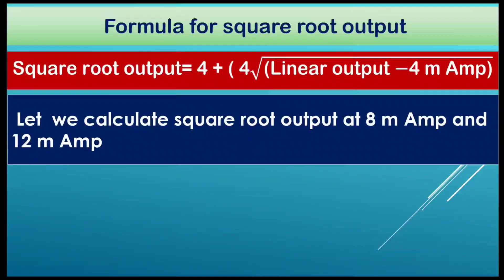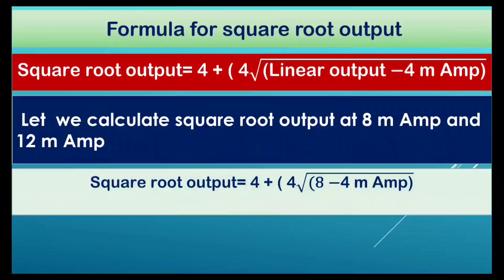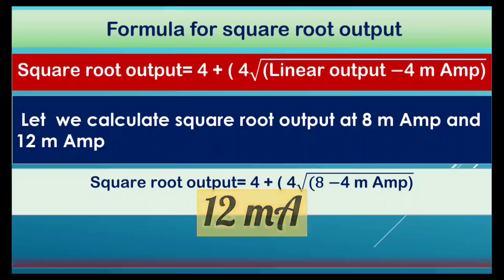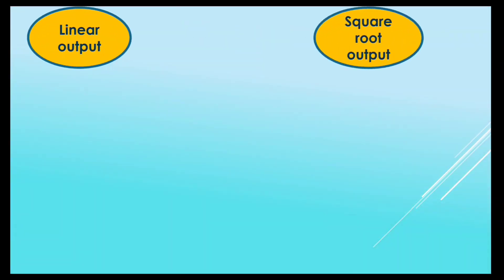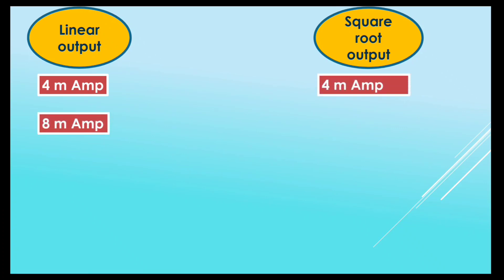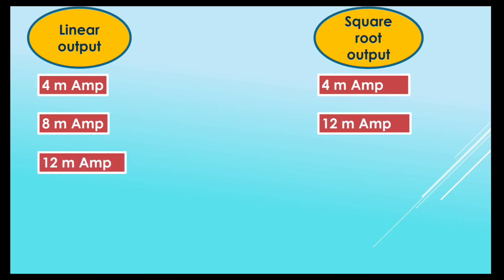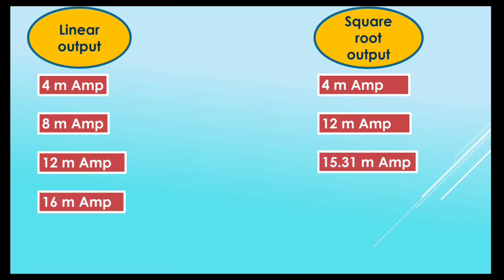Now let's calculate the square root output at 8 mA and 12 mA. When we calculate at 8 mA, the square root output will be 4 plus 4 multiplied by square root of (8 minus 4), because the linear output is 8 mA. Solving this gives 12 mA. When we calculate at 12 mA, the square root output will be 15.31 mA.